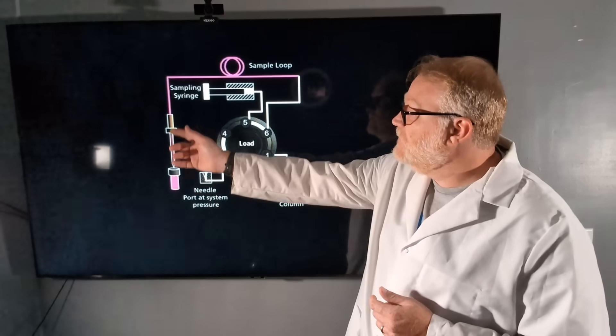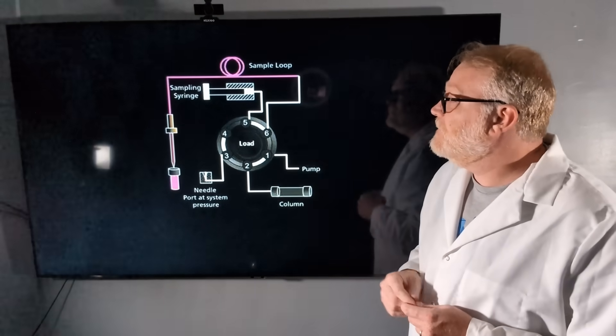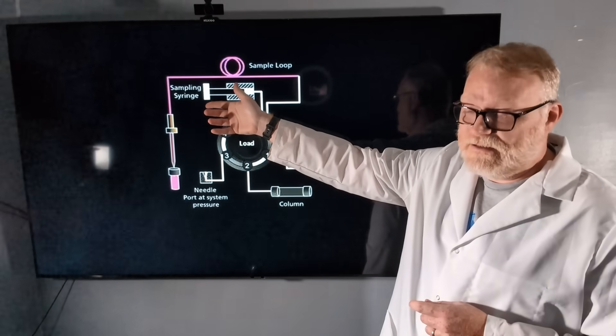In this case, our needle moves to our vial, and it's going to pull up some amount of sample by way of sampling syringe.